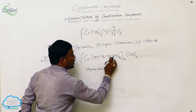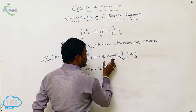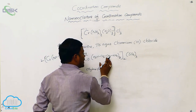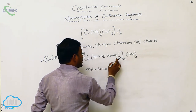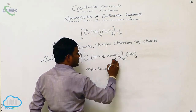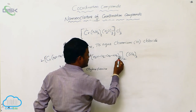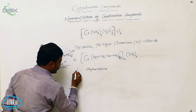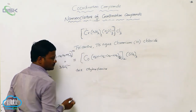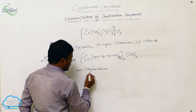Ethylenediamine is a complex ligand. For complex ligands, if a similar type of complex ligand is present inside the coordination sphere in more than one — specifically if present three times — then we have to use the prefix 'tris'. So it becomes tris(ethylenediamine).